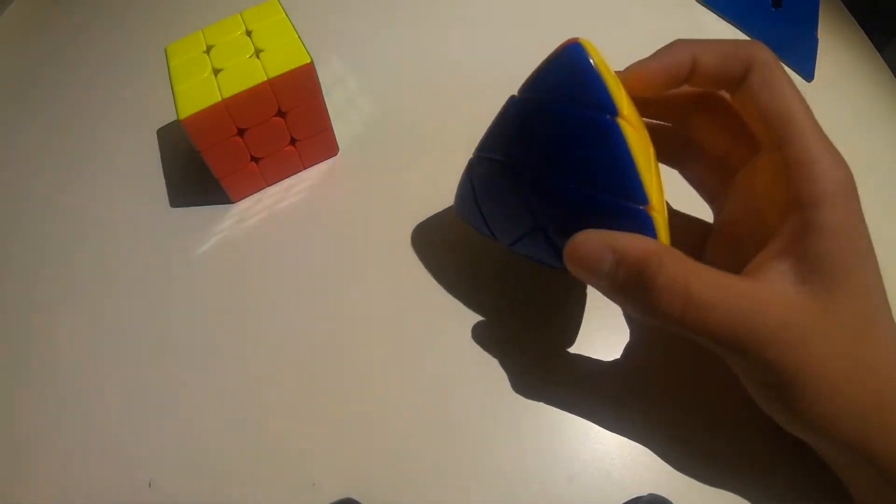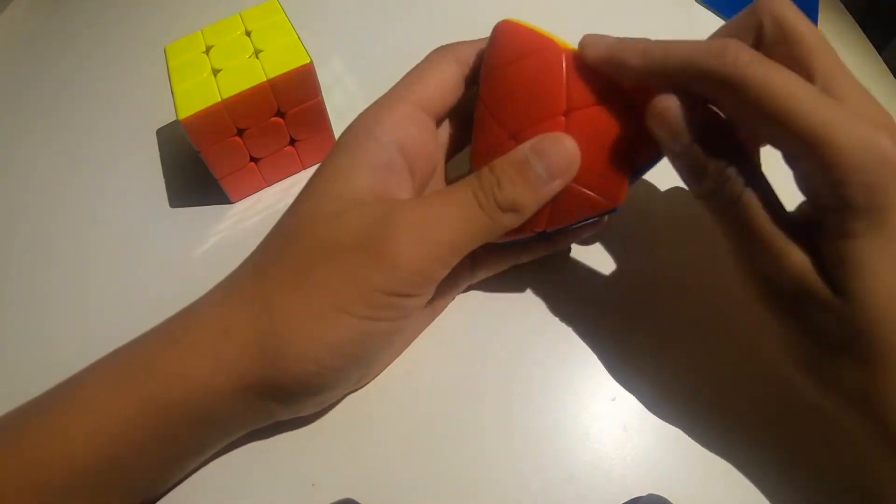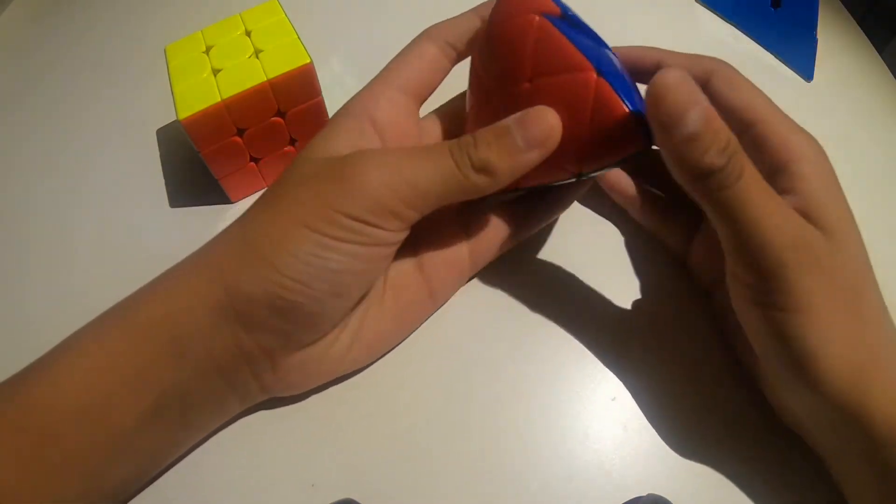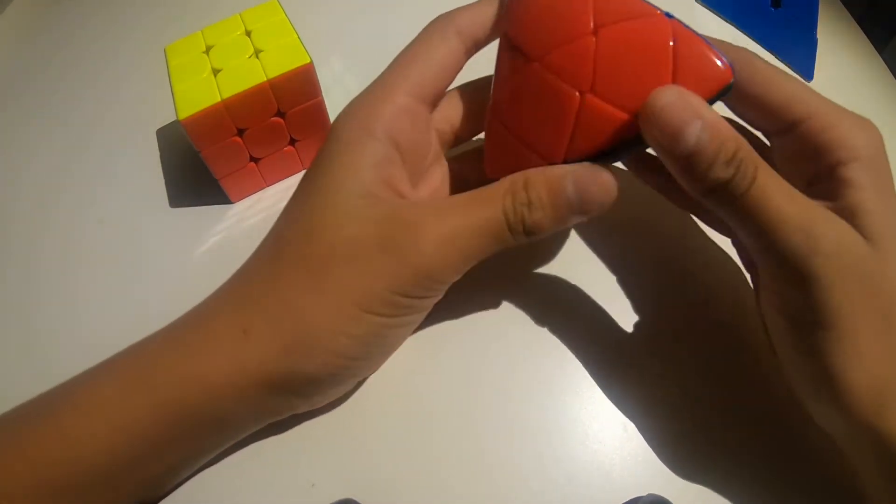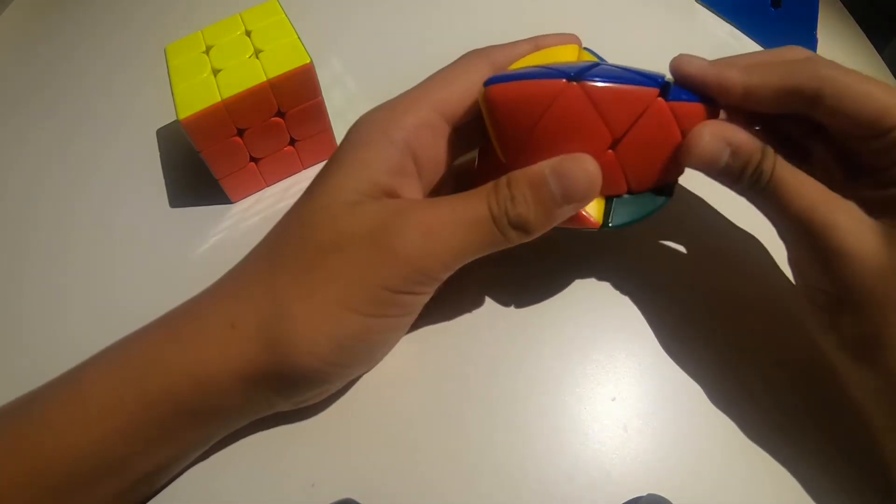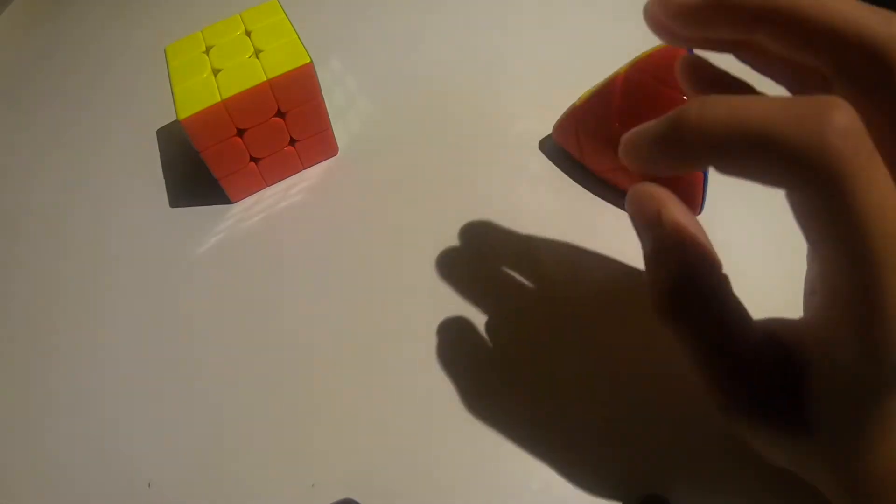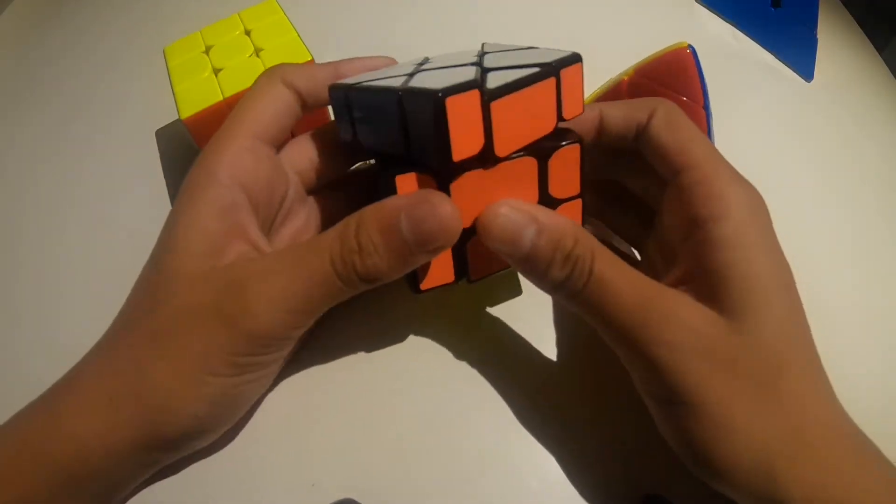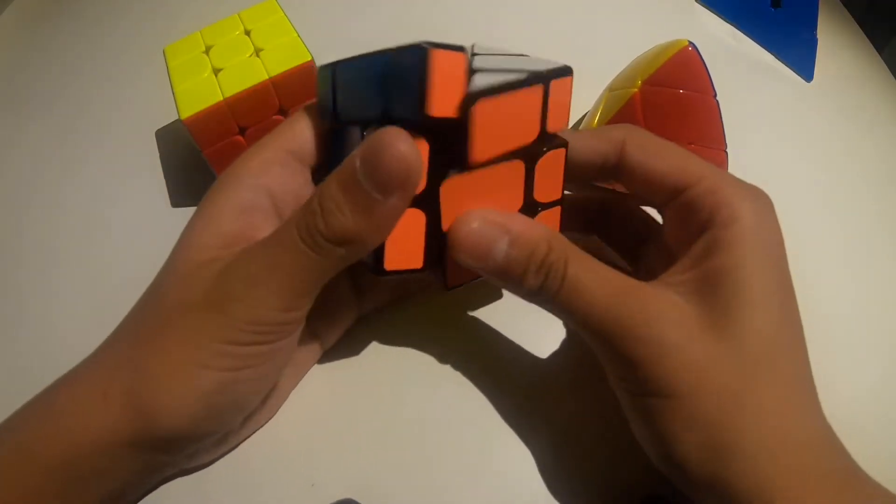But on the Master Morphix, every single center can twist. And also, the pieces are awkwardly shaped as well. Like, this is a corner, but this is a corner also. And these are edges. Where the Fish Cube is a lot more, I guess, it makes a lot more sense.